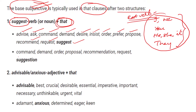Look at the noun forms of these verbs: Command, Demand, Order, Proposal, Recommendation, Request, Suggestion. These noun forms also trigger the Subjunctive. We use after these noun forms with the 'that' clause the Subjunctive form. When we learn the examples, it will be clear.